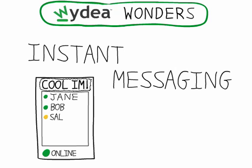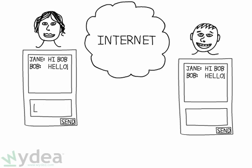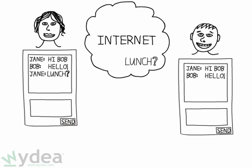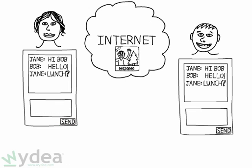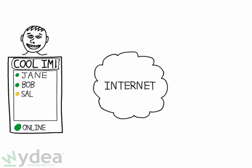Secrets of Instant Messaging. Instant messaging is one of the fastest growing forms of communication, both at home and at work. IM helps people send quick text messages around the world, talk for free on the internet, and transfer files, all pretty much instantly. So how does it work?